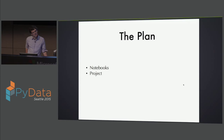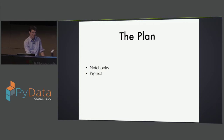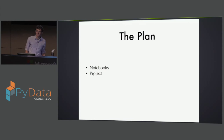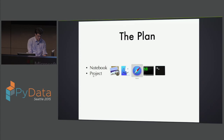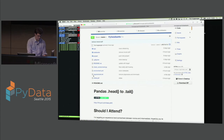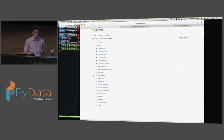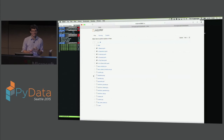The plan is pretty simple: we have notebooks, and I think I could actually scratch the project since we're probably not going to have time for it. Our plan is just to do the notebooks. I'm actually going to jump over to those now. Let's do a check - how is the download coming on the repository, percentage-wise? Git doesn't tell you percent, does it?